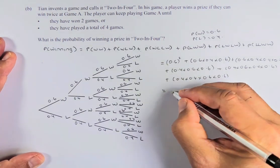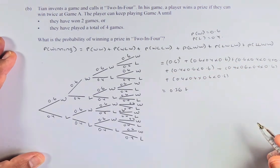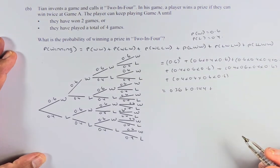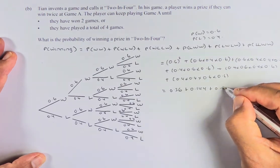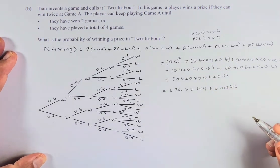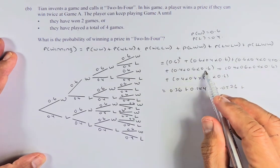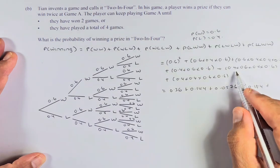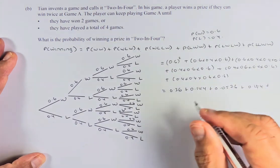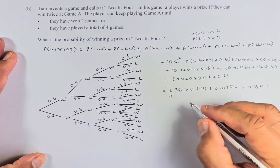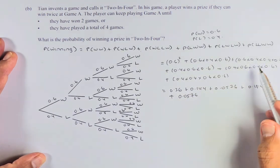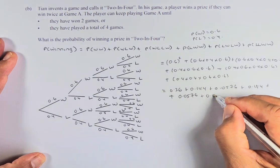0.6 squared is 0.36. This number, 0.6 times 0.4 times 0.6, should give you 0.144. Similarly, 0.6 times 0.4 times 0.4 times 0.6 equals 0.0576. Please check that I am doing this rightly. The next one, 0.4 times 0.6 times 0.6, is the same, so it's 0.144 again. And 0.4 times 0.6 times 0.4 times 0.6 equals 0.0576. And 0.4 times 0.4 times 0.6 times 0.6 is also 0.0576.